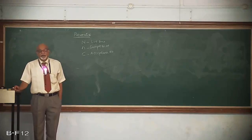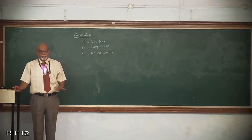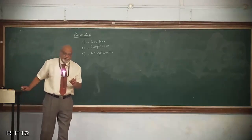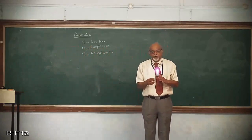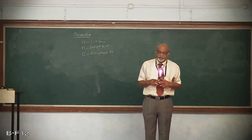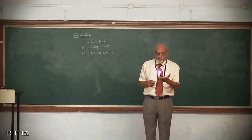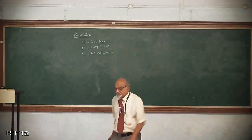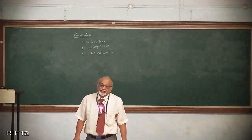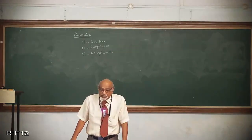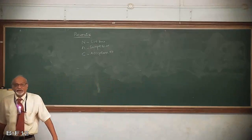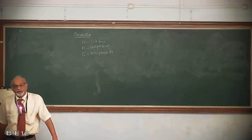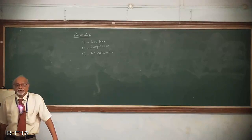In a single sampling plan, only one opportunity is given for the lot, either to accept or reject. In an acceptance rectification plan, the accepted lots will be accepted, and the rejected lots will be subjected to 100% inspection. Whatever defectives have been found out, those are replaced by good items. That is what is called as acceptance sampling plan.